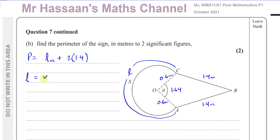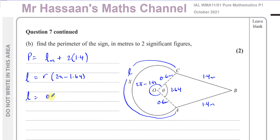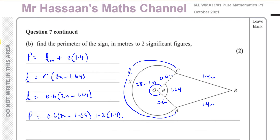The arc length is R times the angle subtended. The angle for the major arc is not 1.64 — it's 2π minus 1.64, since 2π radians equals 360°. So the arc length L = 0.6 × (2π − 1.64). Therefore the perimeter = 0.6 × (2π − 1.64) + 2 × 1.4.